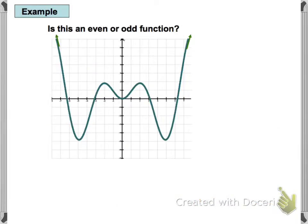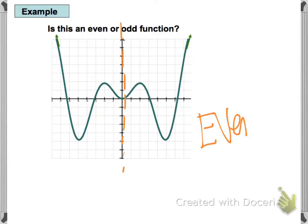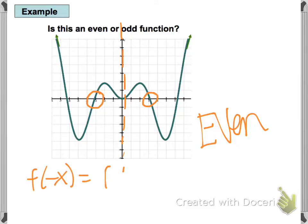Let's look at a couple of graphs. The first one — even or odd? It looks like we have y-axis symmetry: I can fold this over the y-axis and get the same thing. Y-axis symmetry means it's even. For example, if you plug in negative 3, you get the same answer as plugging in positive 3, so f of negative x equals f of x.